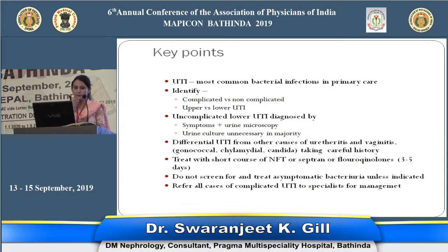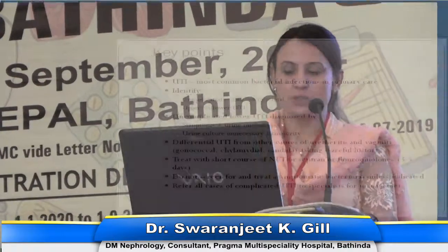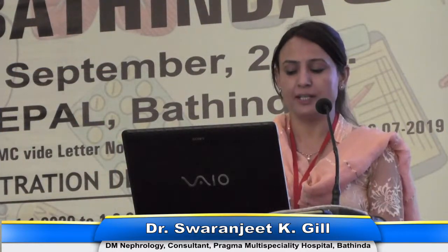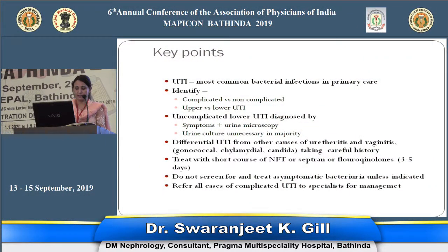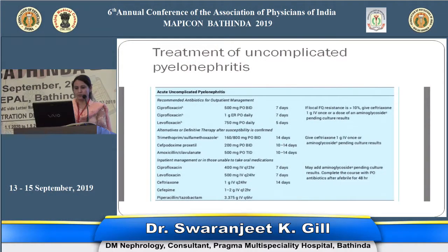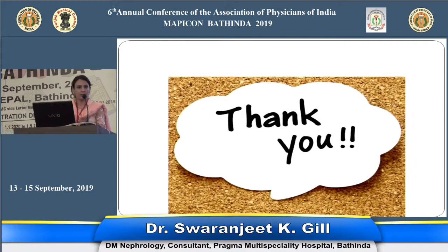To conclude: UTIs are the most common bacterial infections. Whenever you see a patient of UTI, identify whether it is upper versus lower and complicated or uncomplicated. Uncomplicated UTI can simply be diagnosed with symptoms and urine microscopy — urine culture is not necessary. Differentiate UTI from other causes of urethritis and vaginitis with careful history, as these require different therapy. Always treat with a short course of simple antibiotics like nitrofurantoin and Septran; if not tolerated, use fluoroquinolones. Do not screen for asymptomatic bacteriuria, do not treat patients with asymptomatic bacteriuria, and refer cases of complicated UTI to specialists for management.